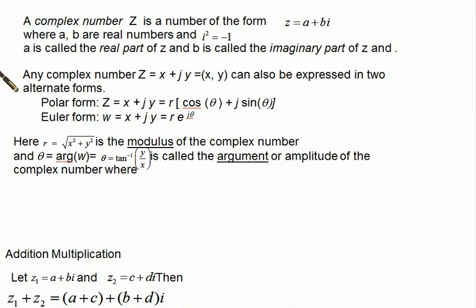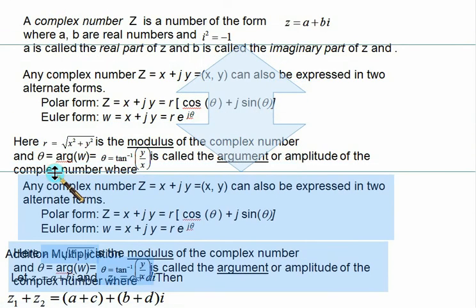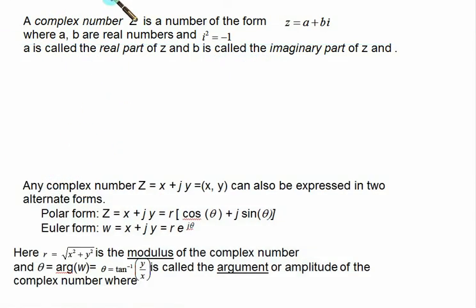This video will introduce you to the complex number. A complex number basically consists of two parts: one is called the real part and the other is called the imaginary part. Here z is given as a plus bi, where a and b both are real numbers and b is multiplied by i, which is equal to the square root of minus one.